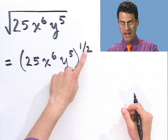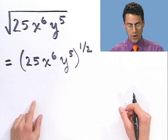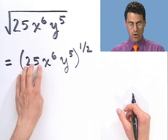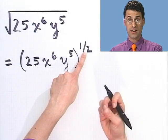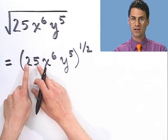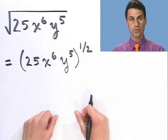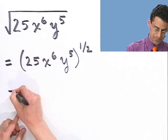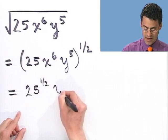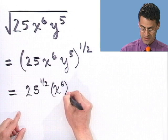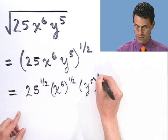A 1/2 power is the same thing as taking a square root. Now, one of the laws of exponents says that if I have a whole bunch of different things all raised to the same power, I can do it à la carte: take each factor to that power and multiply. So this is 25 to the 1/2 power, times x to the sixth all to the 1/2 power, times y to the fifth all to the 1/2 power.